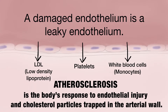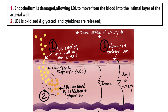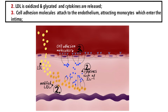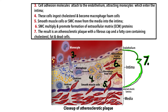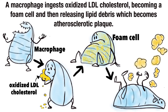As the endothelium suffers chronic injury, it becomes more leaky, allowing LDL, platelets, and monocytes to exit the bloodstream and penetrate into the arterial wall. Once the monocytes have breached the endothelial layer of the artery, they enter the next layer, which is the intimal layer. Once inside the intima, these immune cells called monocytes actually transform into macrophages.